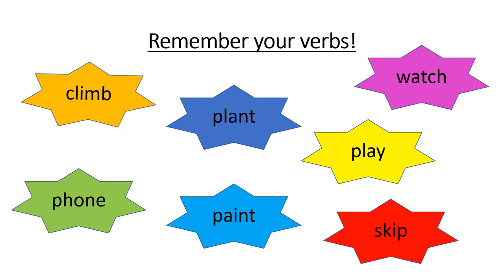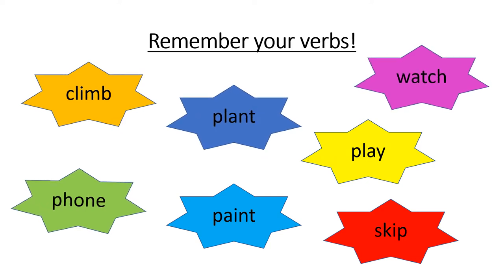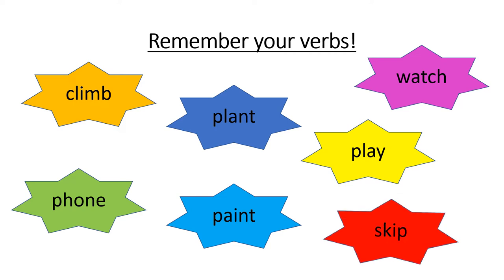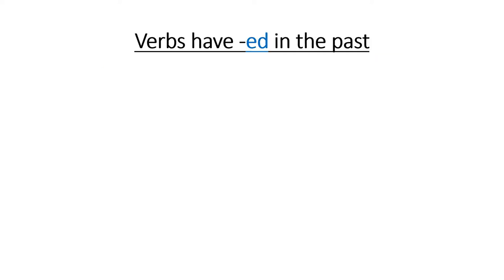For example: climb, plant, watch, phone, paint, play, and skip. In the past, all of these verbs have got -ed. That's how we know they are in the past.